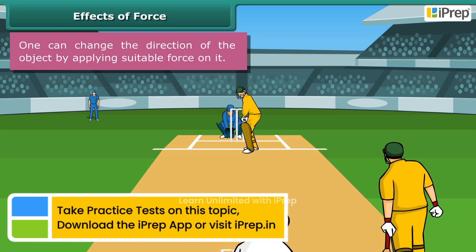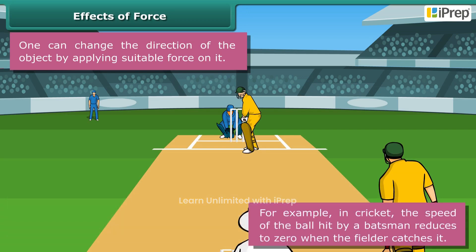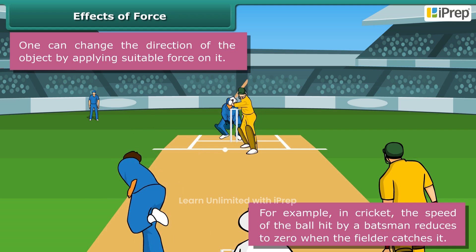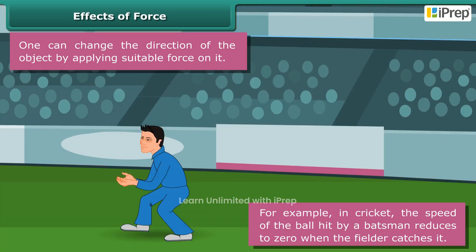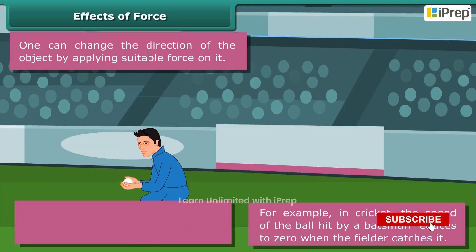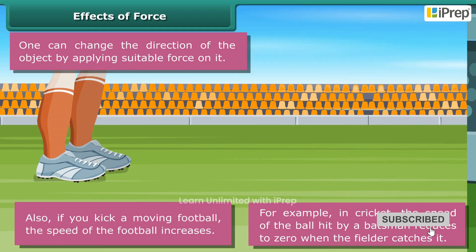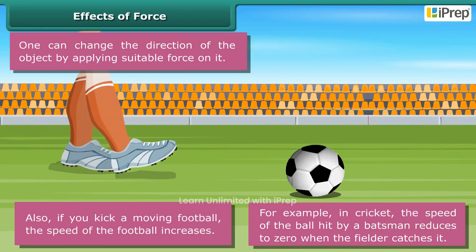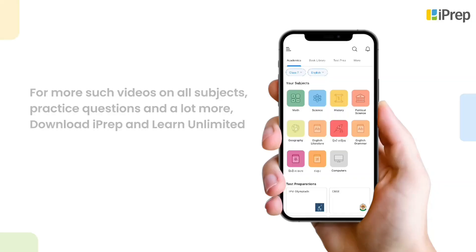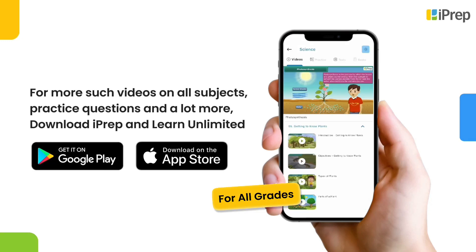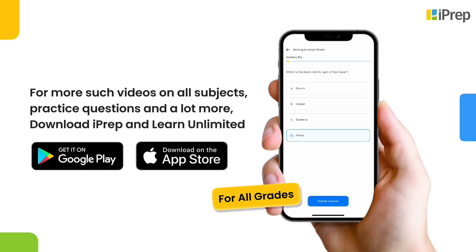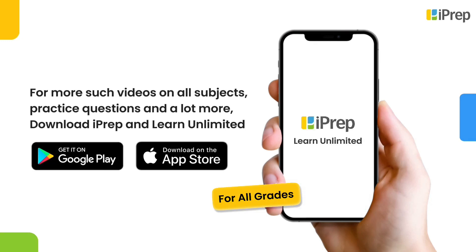Effects of force: one can change the direction of an object by applying suitable force on it. For example, in cricket, the speed of the ball hit by a batsman reduces to zero when the fielder catches it. Also, if you kick a moving football, the speed of the football increases.